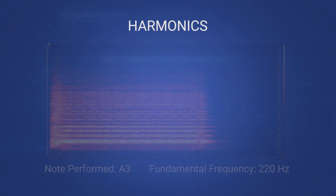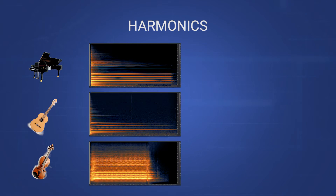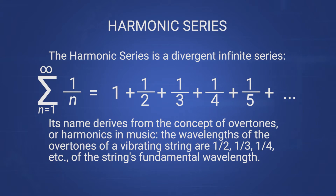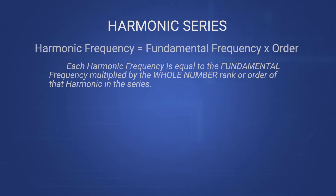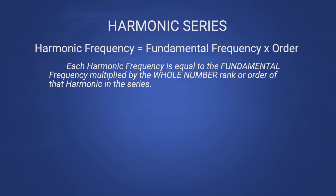Finally, you may have noticed that all of these instruments' harmonics follow identical frequency patterns. This is due to the physics of sound and vibration, and it results in a very simple mathematical series we call the harmonic series. Without going too deeply into the mathematics, which comes from experiments plucking strings of different lengths, we'll derive a simple calculation: when given any fundamental frequency, each harmonic can be calculated by multiplying the fundamental with the harmonic's whole number order in the series.